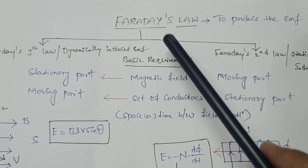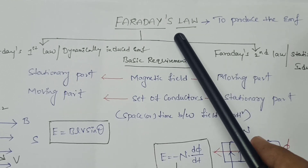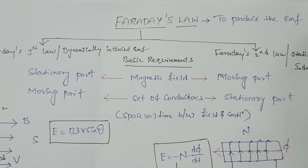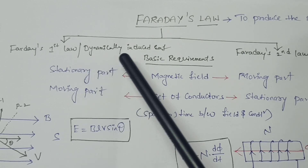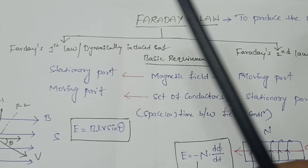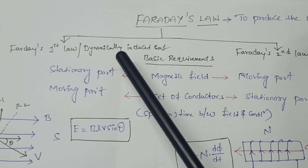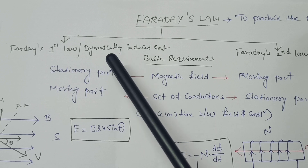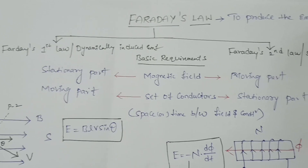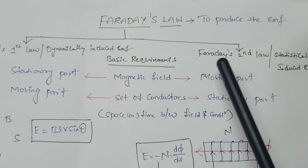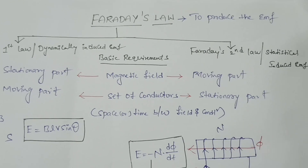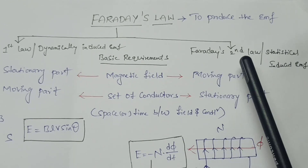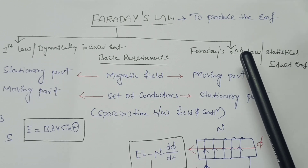Faraday's law consists of two laws. Faraday's first law is also called dynamical induced EMF and is associated with relative space variation. Faraday's second law is also called statistical induced EMF and is associated with relative time variation.